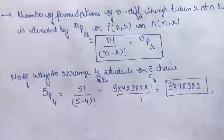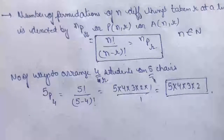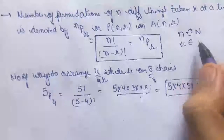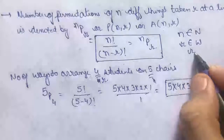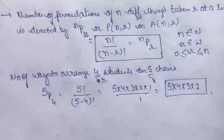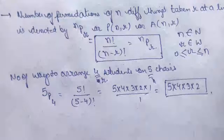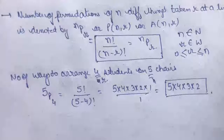In nPr there are certain conditions: n always belongs to natural numbers because it is the number of elements, so n is always a natural number. r belongs to whole numbers — r could be 0. r is always greater than or equal to 0 and less than or equal to n, because we are selecting r things out of n. r cannot be greater than n, and it cannot be negative.